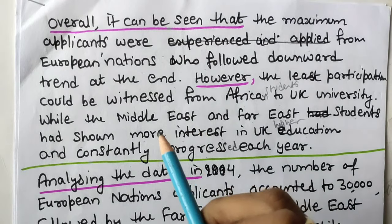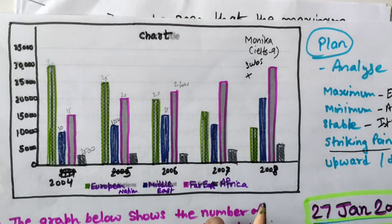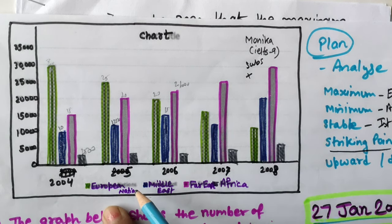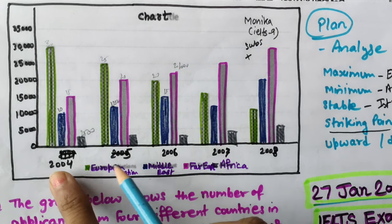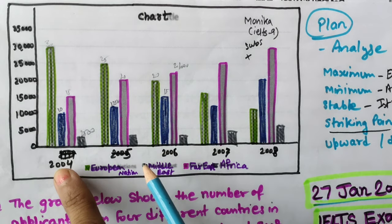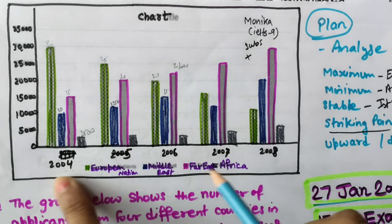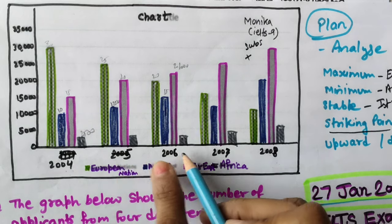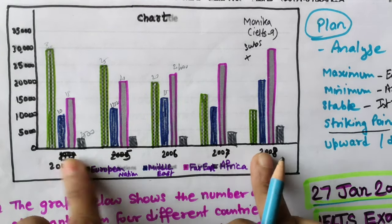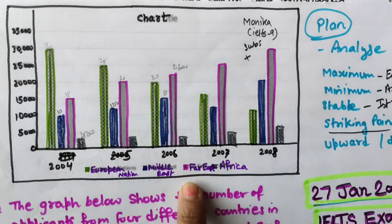For detailed paragraphs, there are four categories and five years. You can either write four paragraphs for each category, combine two categories, write year-wise, or combine two years. The first and last years must be written separately and clearly - show how the data started and finished. You can combine the middle years. Category-wise is actually easier to write than year-wise.